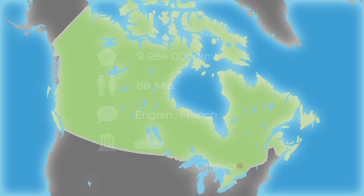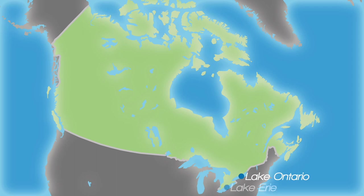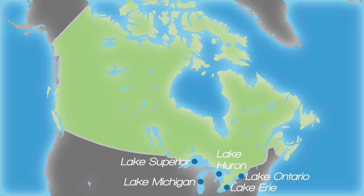Canada has a total of about 2 million lakes spread throughout its territory. The most important are the Great Lakes in the south of the country. From east to west, these are Lake Ontario, Lake Erie, Lake Huron, Lake Michigan, and Lake Superior. The most important river in the country is the St. Lawrence River, which connects the Great Lakes to the Atlantic Ocean.